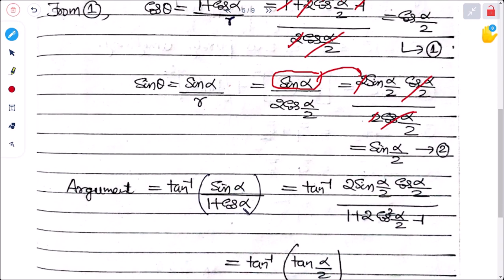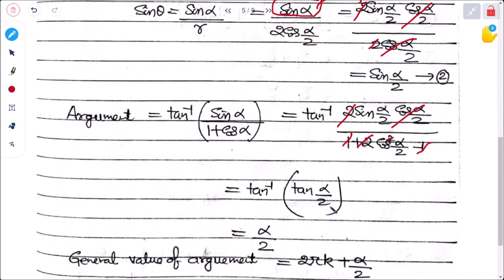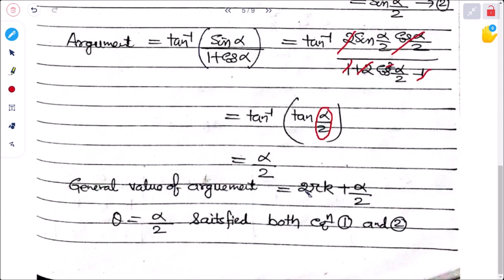The argument = tan⁻¹(y/x) = tan⁻¹(sin α / (1 + cos α)) = tan⁻¹(2sin(α/2)cos(α/2) / 2cos²(α/2)) = tan⁻¹(sin(α/2)/cos(α/2)) = tan⁻¹(tan(α/2)) = α/2. The general value of the argument is 2kπ + α/2.